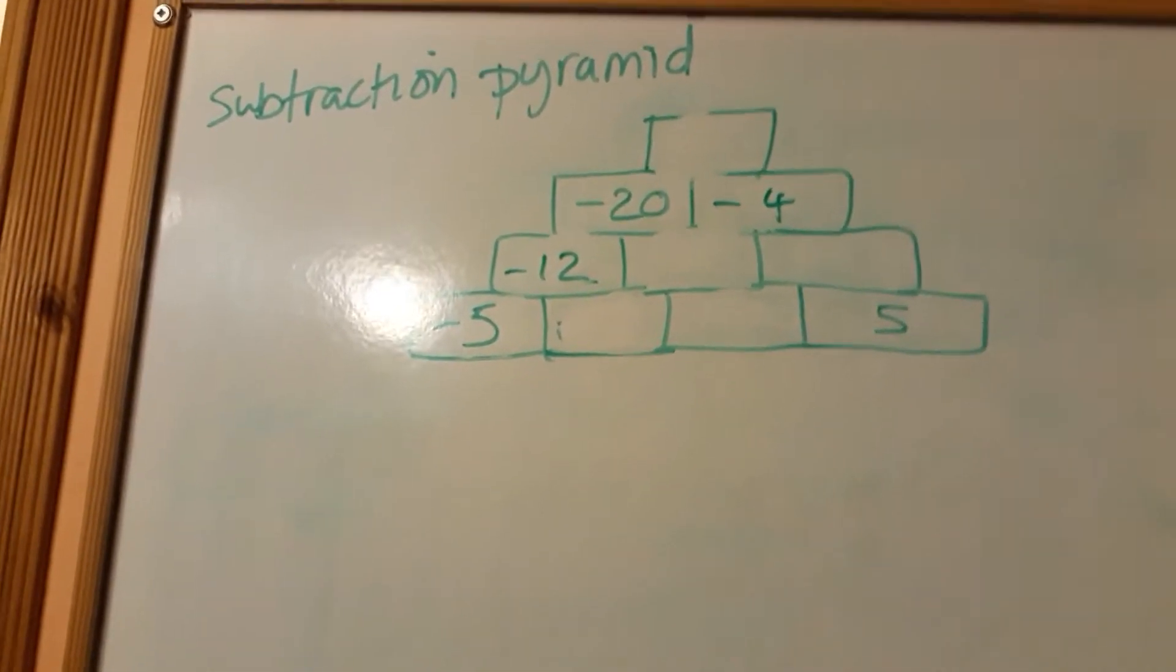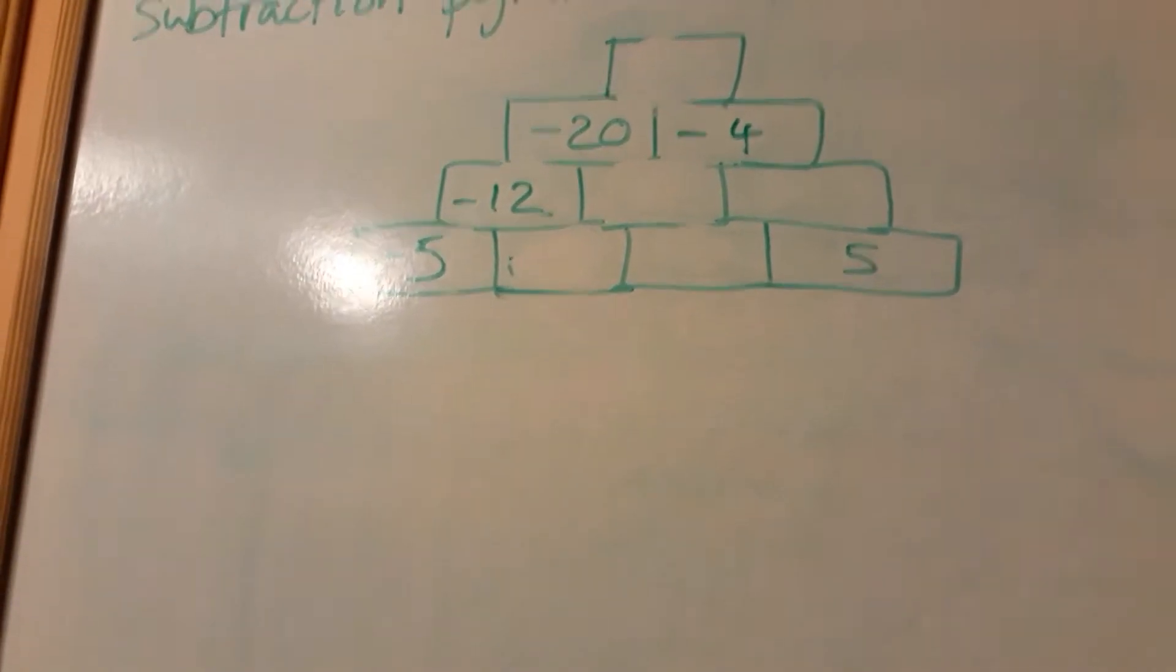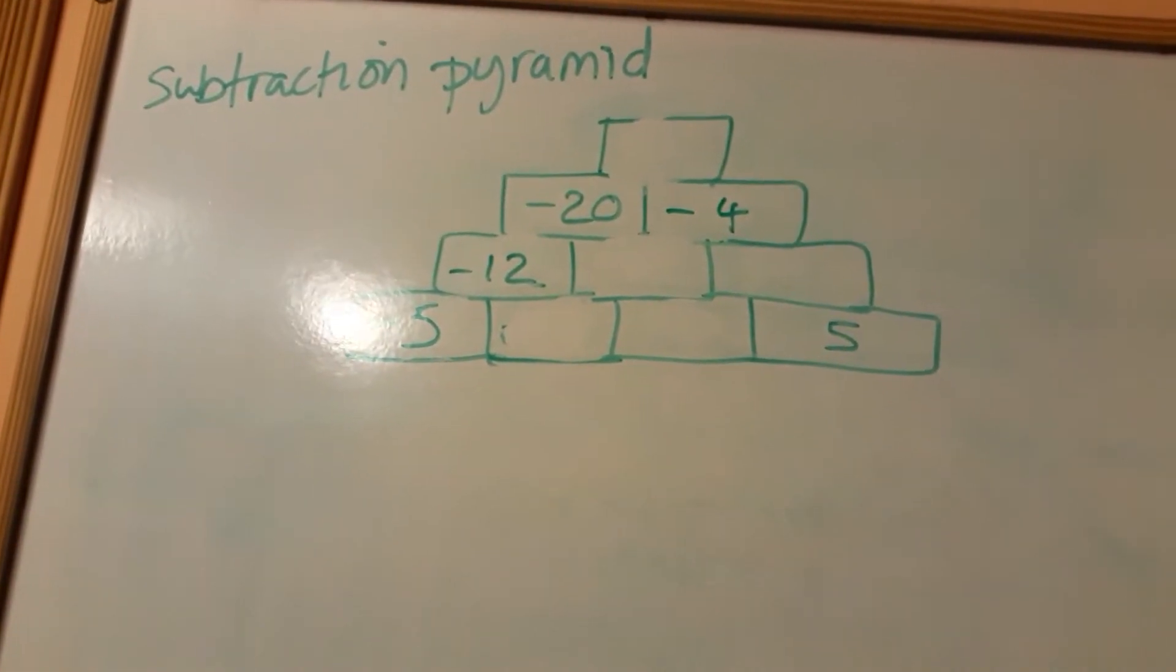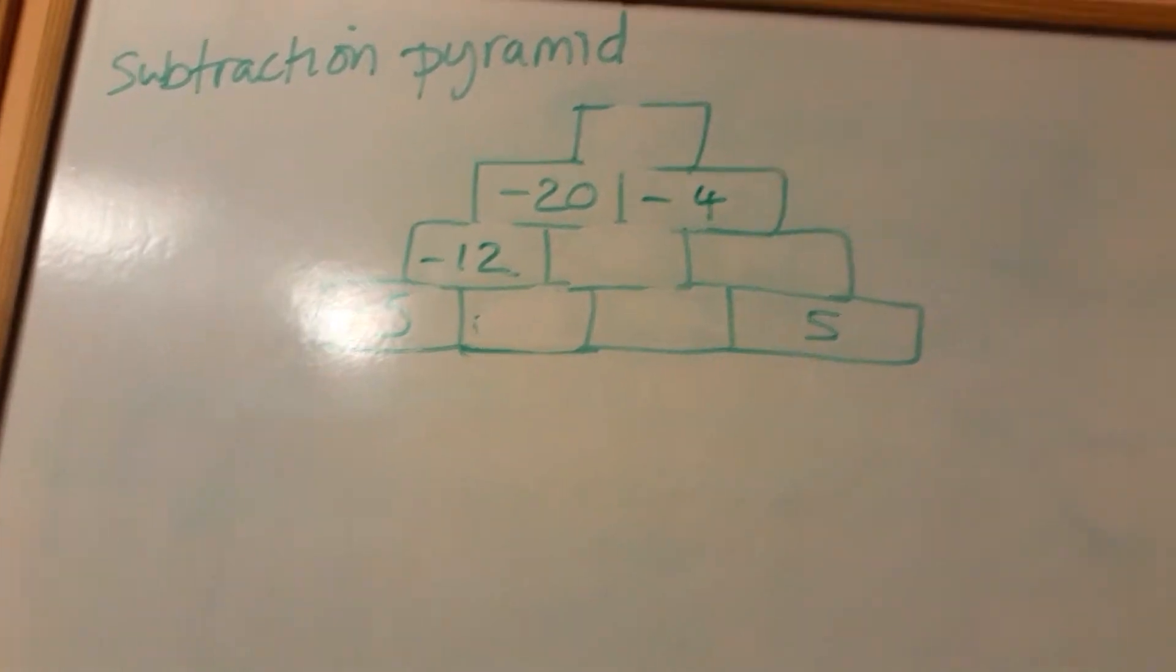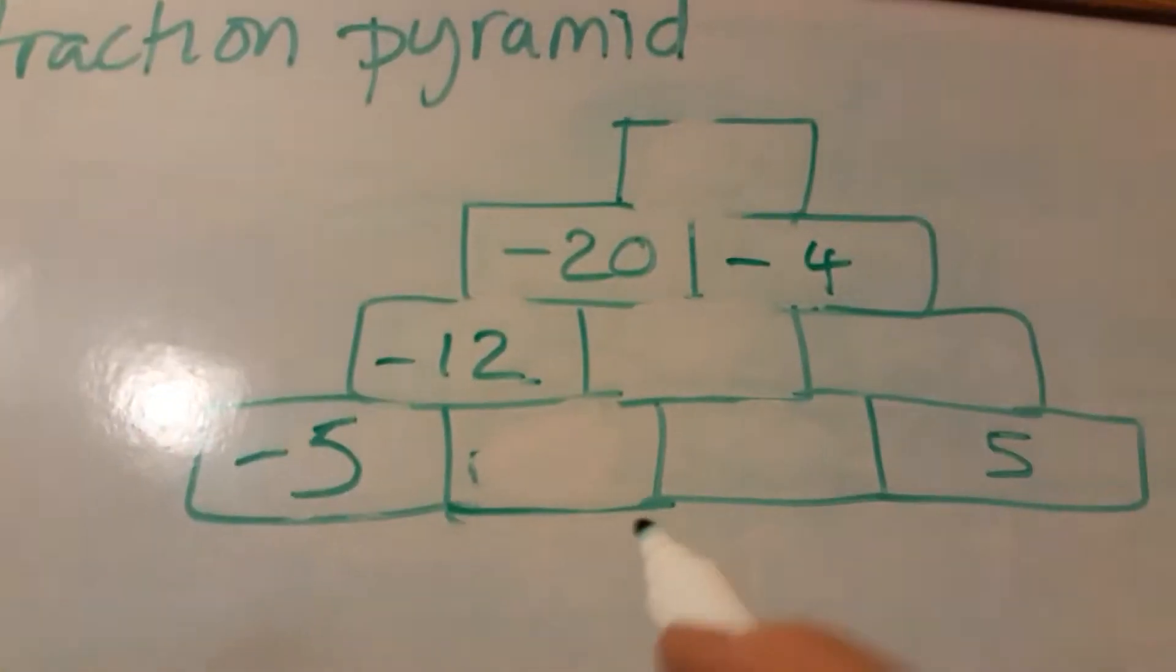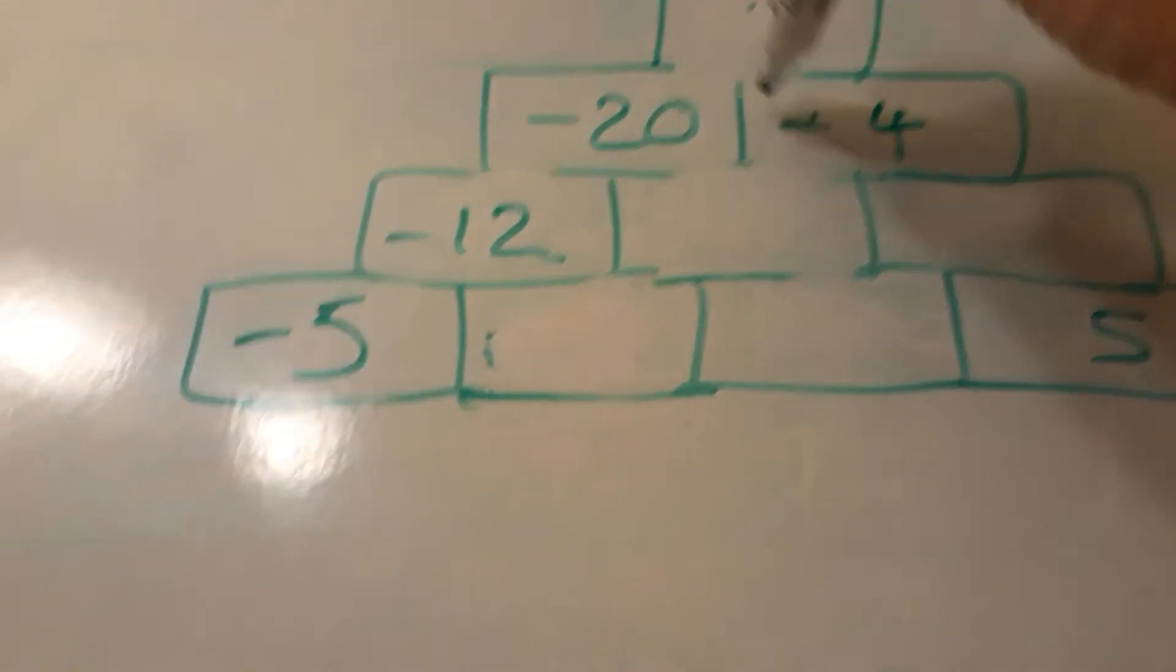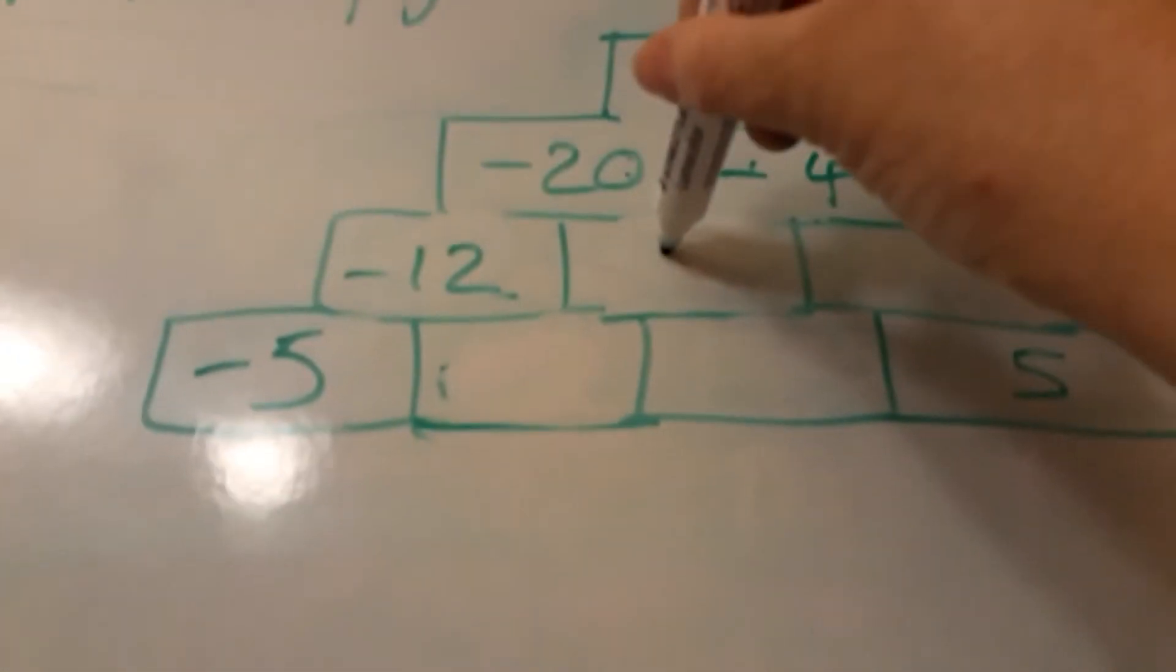Hello, this is a subtraction pyramid. I thought we'd have a go at some pyramids this time. If you've never done them before, it's quite easy. Basically, the top number is a result of these two numbers, and this number is a result of those two numbers.